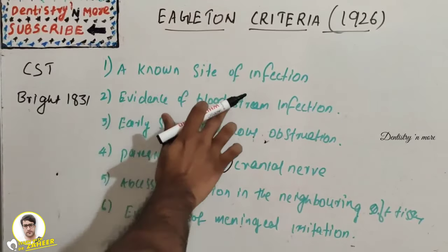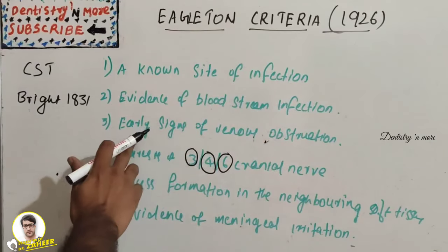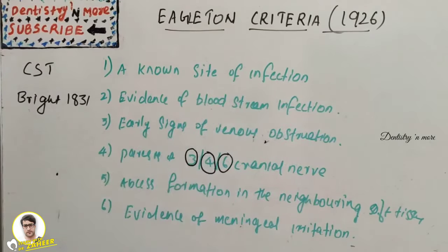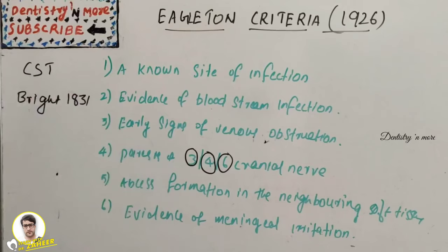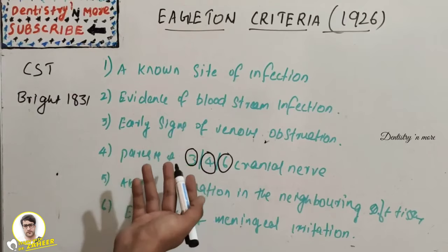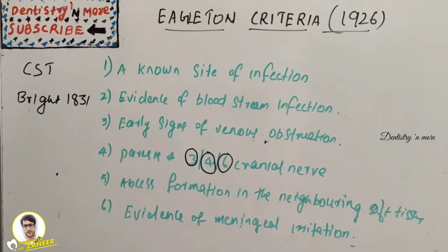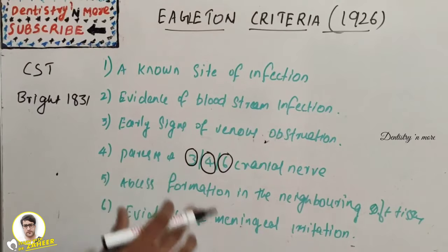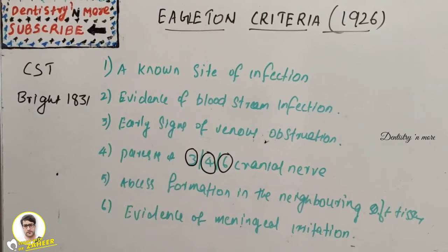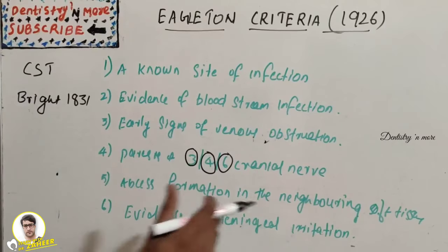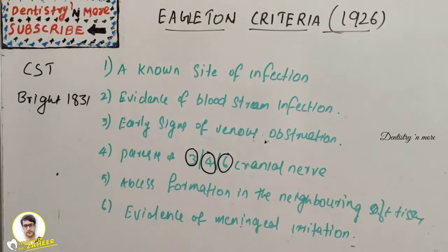The second criterion is evidence of bloodstream infection. Third, there should be early signs of venous obstruction. Fourth, there should be involvement of the nerves in the sinus, that is the third, fourth, and sixth cranial nerves. Fifth, there should be abscess formation in the neighboring soft tissues. Sixth, there should be evidence of symptoms of meningeal irritation. These are the six criteria to confirm CST.